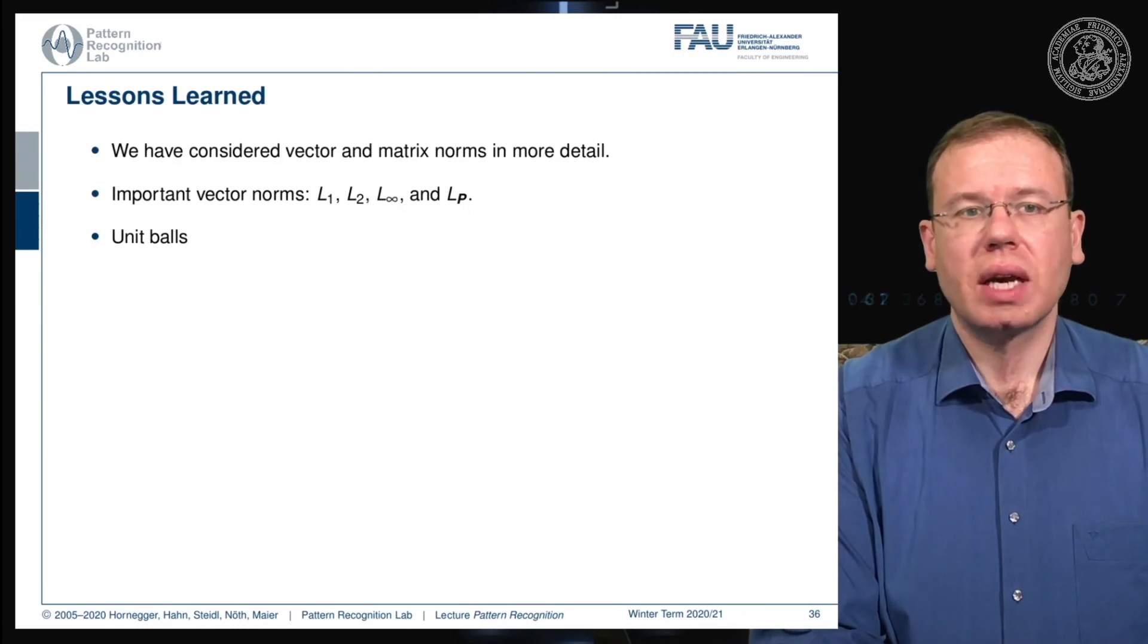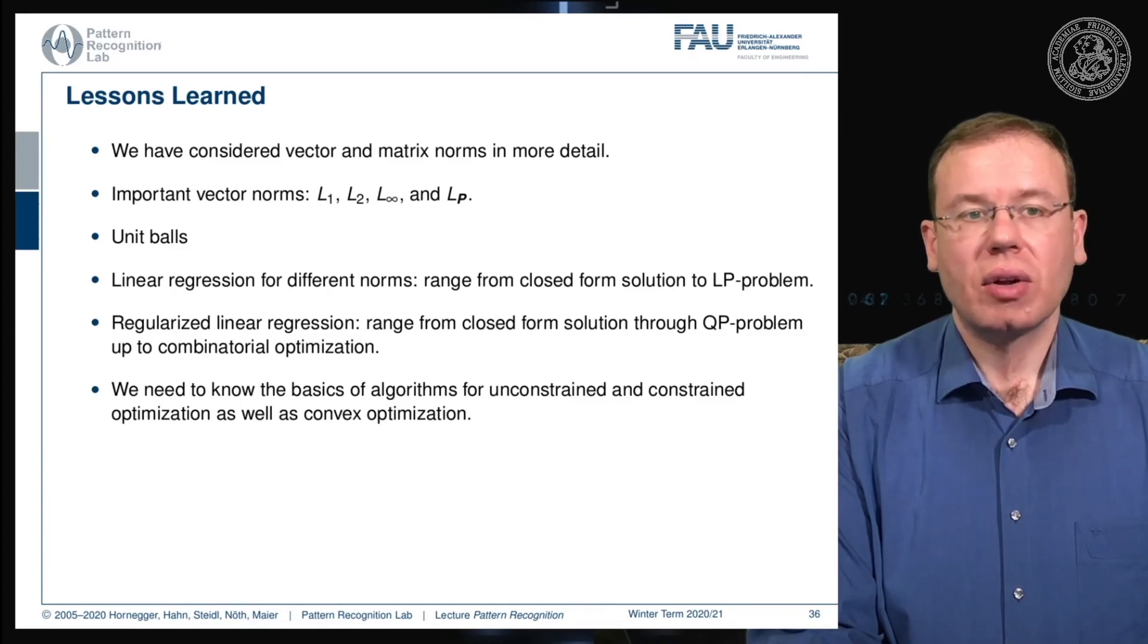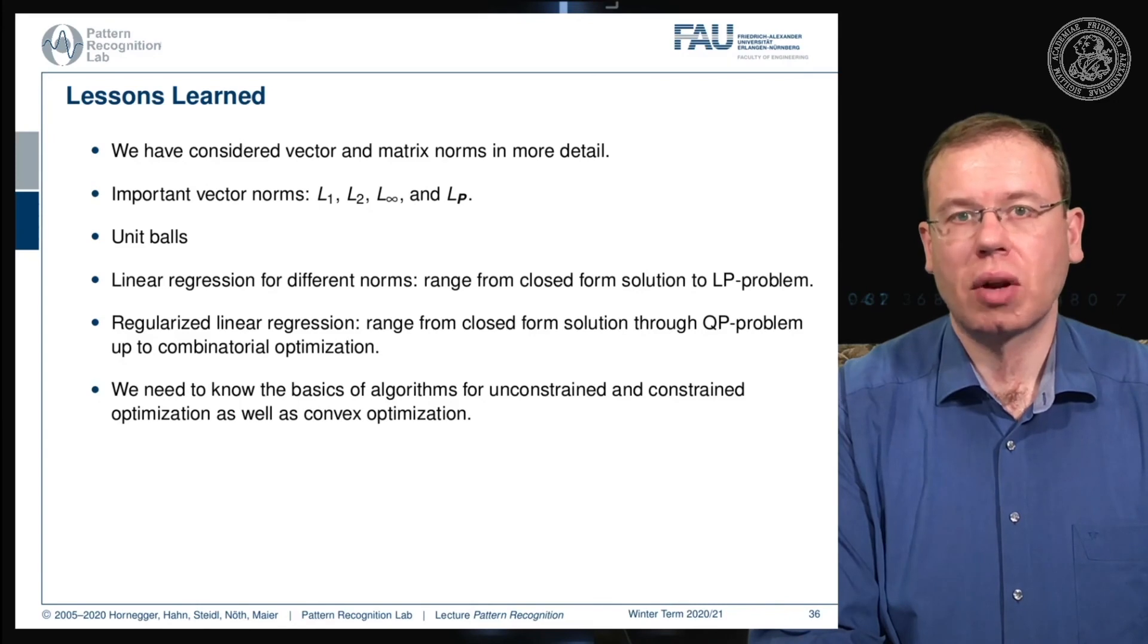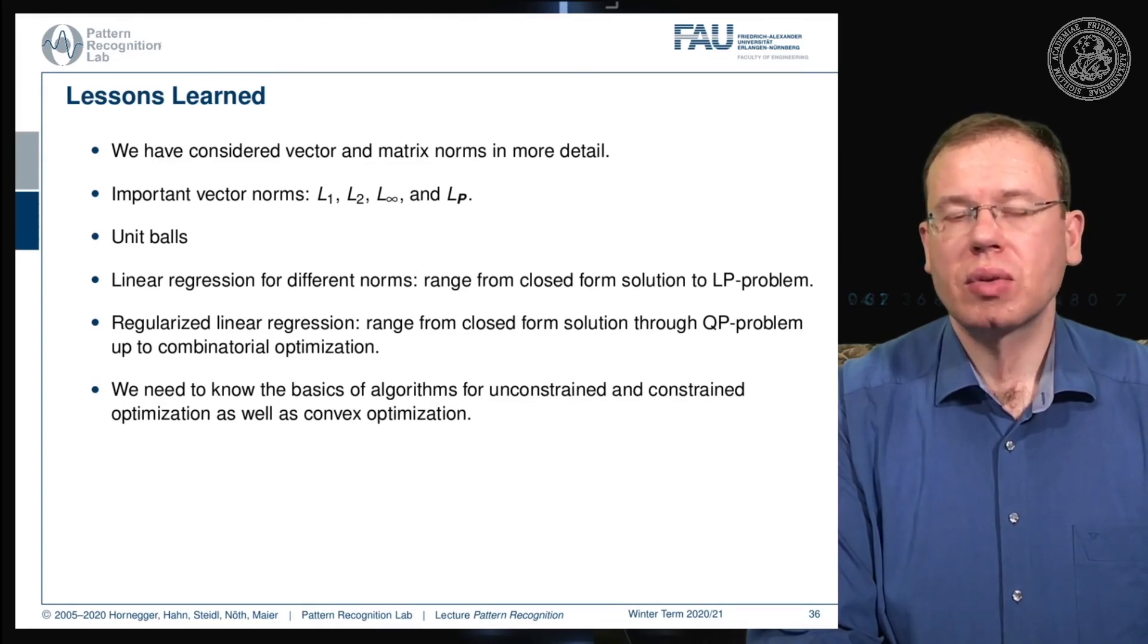What are the lessons that we learned here? We have considered vector and matrix norms in more detail. We have seen that there are important norms - the ones that we encounter quite frequently are the L1 norm, L2 norm, L infinity norm and Lp norm. We looked into the respective unit balls and we've seen that we can use them for linear regression as well. They range from closed form solutions to Lp problems. The regular linear regression can range from closed form solutions through QP problems and combinatorial optimization problems, particularly if you go to the non-convex cases. Depending on the objective function that you're setting up, you have to know the properties and which algorithm to apply to solve it effectively. You need to know the basics of constraint and unconstrained optimization as well as convex optimization.